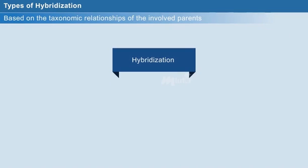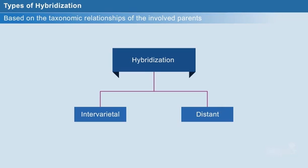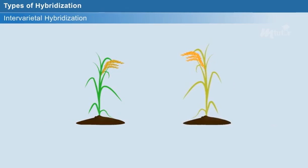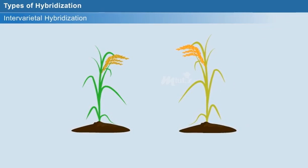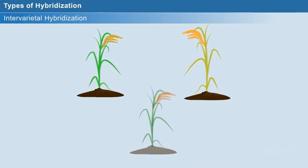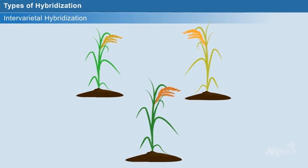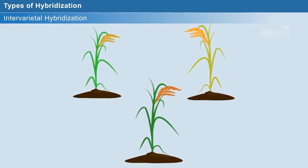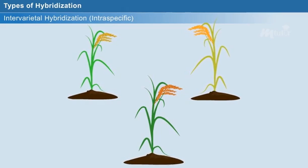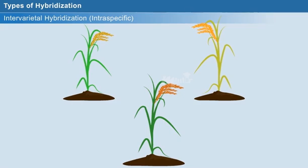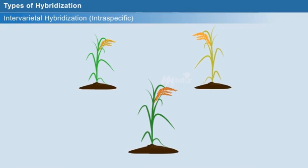Based on the taxonomy of the parents, hybridization can be categorized into two types: intervarietal and distant hybridization. Intervarietal hybridization is the process through which two parents of the same species are crossed together to produce a new variety. It can also be called intraspecific hybridization. An example is the hybrid rice variety TKM9, produced by crossing TKM7 and IR8.